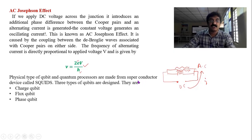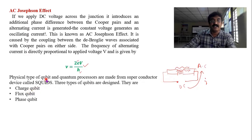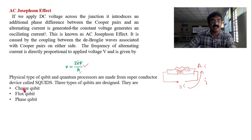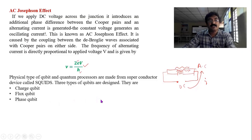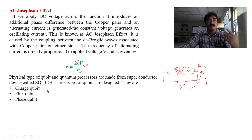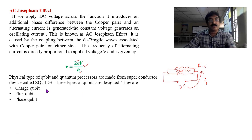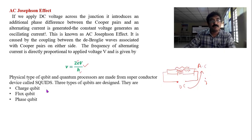Coming to the applications of superconductors: superconductors are used in designing a device called SQUID — Superconducting Quantum Interference Device. SQUIDs are used in designing charge qubits, flux qubits, and phase qubits. Qubits are the building blocks of quantum computers, and these microprocessors made of superconductors are called superconducting quantum computation processors. Just as conductors are essential for classical computers, superconductors are essential for quantum computers.